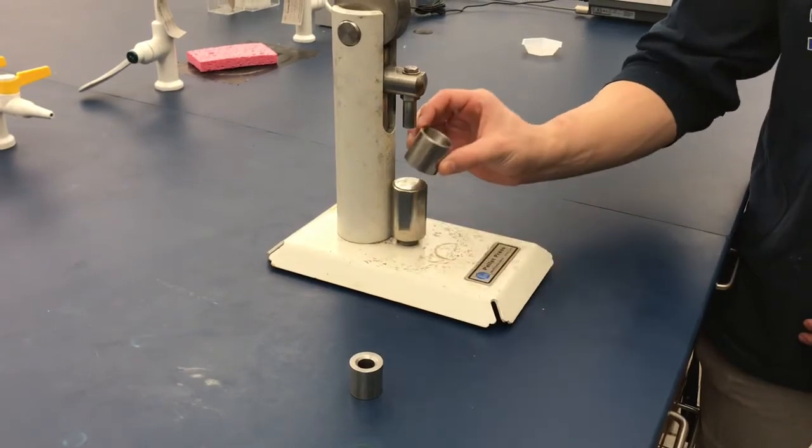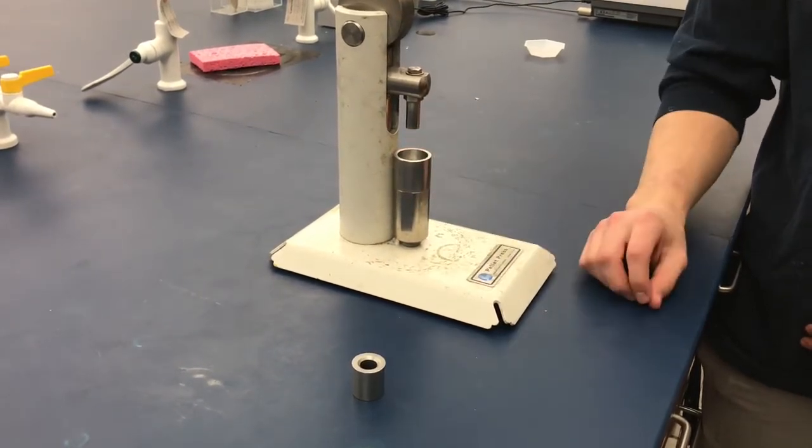Take tube number one and place the side with the beveled edge face down onto the pellet press.